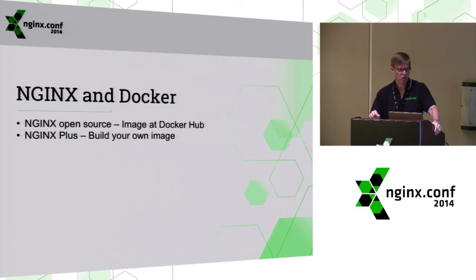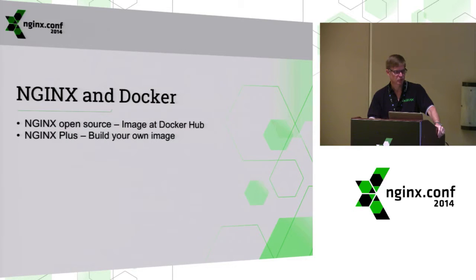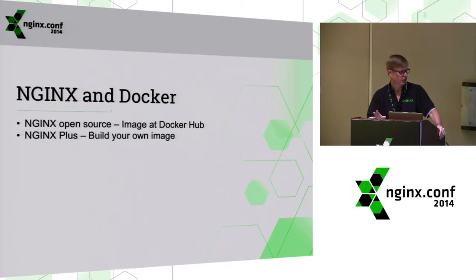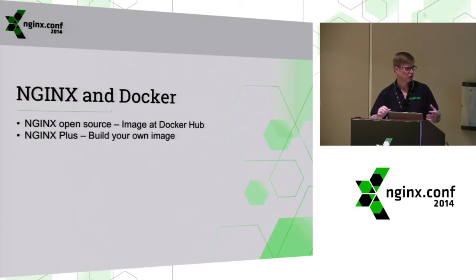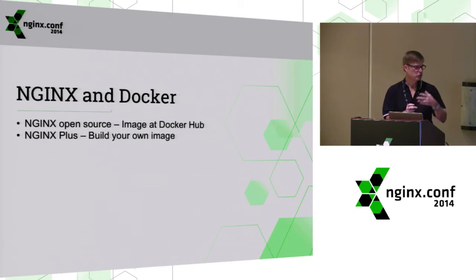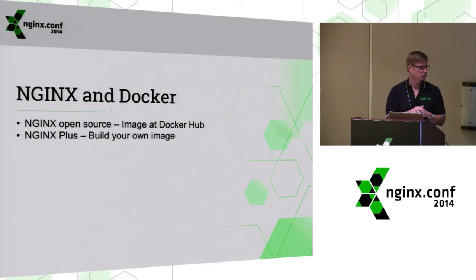When it comes to Nginx and Docker, we just released the open source version. If you go to the hub, you can download it — it is curated by us. Nginx Plus, being a commercial version, we can't release it on Docker Hub today, so you have to create your own image, but I'll show you how — it's pretty simple. One of the nice things about Docker is it's really easy to create images from images. You can take the open source image and create your own version, like a load balancer version, a cache version, or a web server version, and reuse those images very quickly.